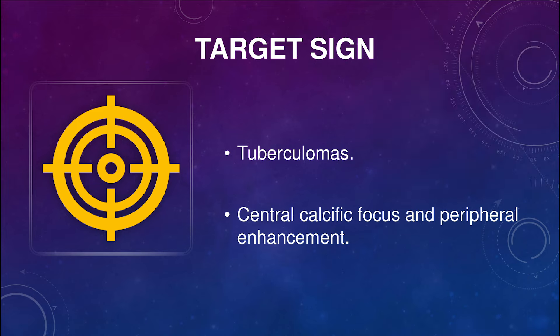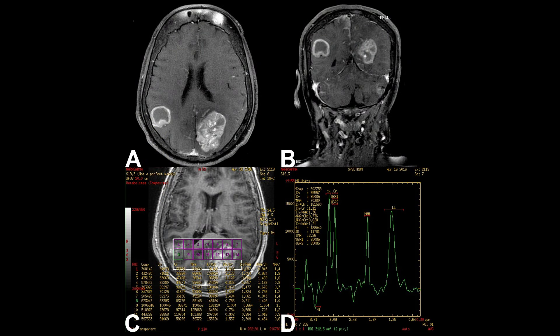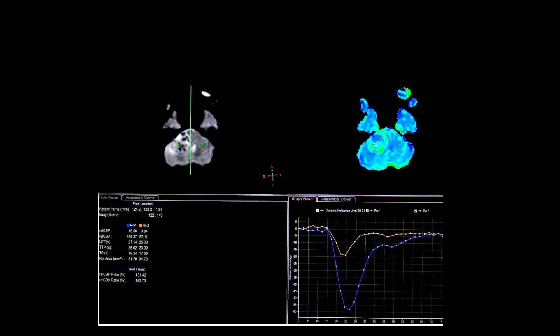The target sign can also be seen in tuberculomas, which shows a central calcific focus with peripheral enhancement. MR spectroscopy in a case of metastasis shows elevated lipid-lactate and choline levels with decreased NAA. A parietal tuberculoma shows elevated lipid-lactate which is greater than choline, with also decreased NAA.